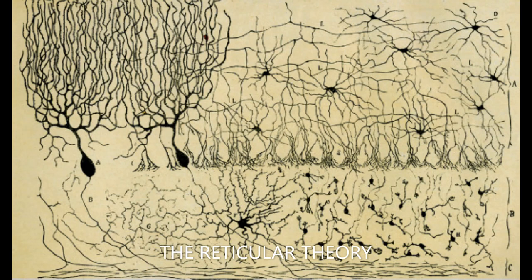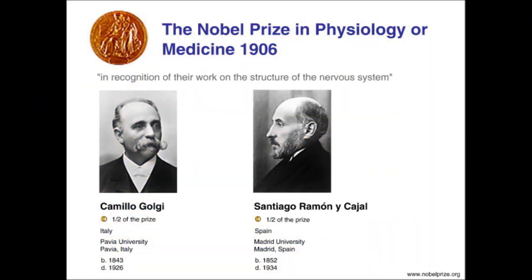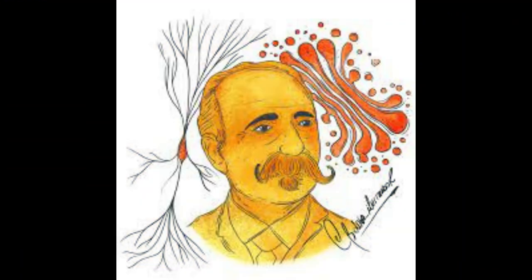Golgi also said that neurons are continuous in nature, which was the concept of the reticular theory given at that time. This theory was disproved and is one of the wrong ideas given by Camillo Golgi. In the year 1906, Cajal and Golgi were awarded the Nobel Prize in Physiology or Medicine for their work on the structure of the nervous system. He was also awarded a few other scientific awards for his contribution to cell biology.